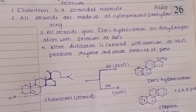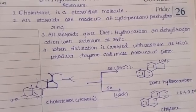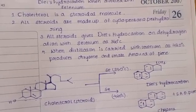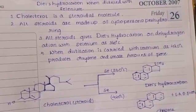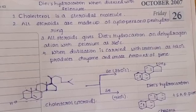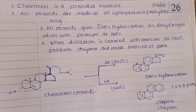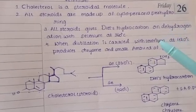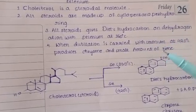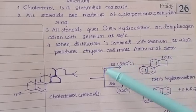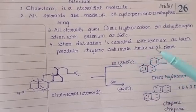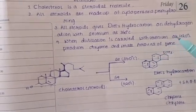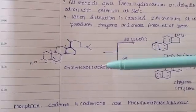All steroids give Diels hydrocarbon on dehydrogenation with selenium at 360 degrees. Dehydrogenation is the removal of hydrogens from the compound. In the presence of selenium at 360 degrees it gives Diels hydrocarbon. When distillation is carried out with selenium at 420 degrees, it produces chrysene and a small amount of pyrene.